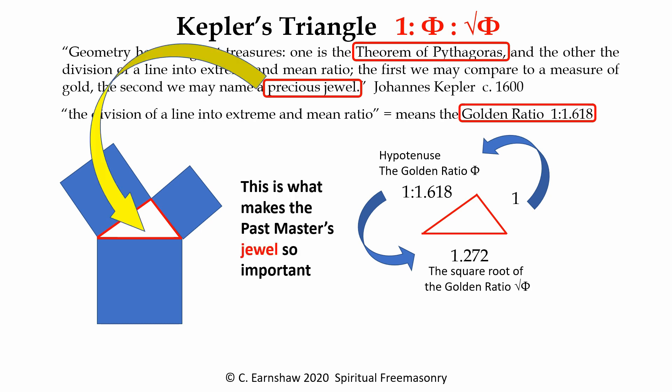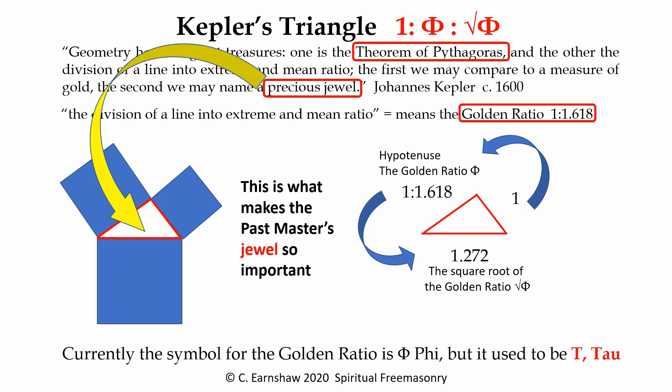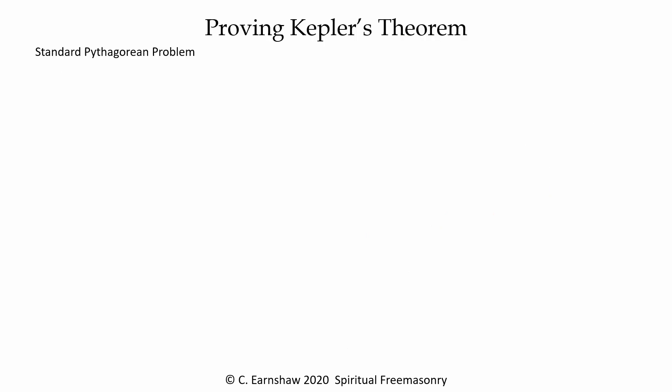That is why Masons wear jewels, not medals. The entered apprentice was shown how to place his feet, and this forms a tau, which is the original symbol for the golden ratio.